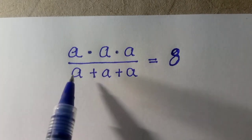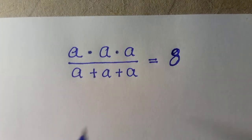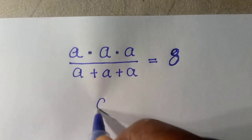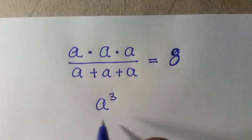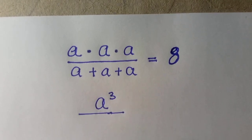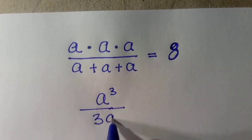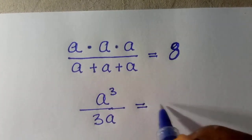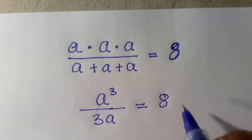So to solve this, if you multiply a multiplied by a multiplied by a, that gives us a raised to the power of 3 divided by a plus a plus a, that gives us 3a. Everything equals 8.